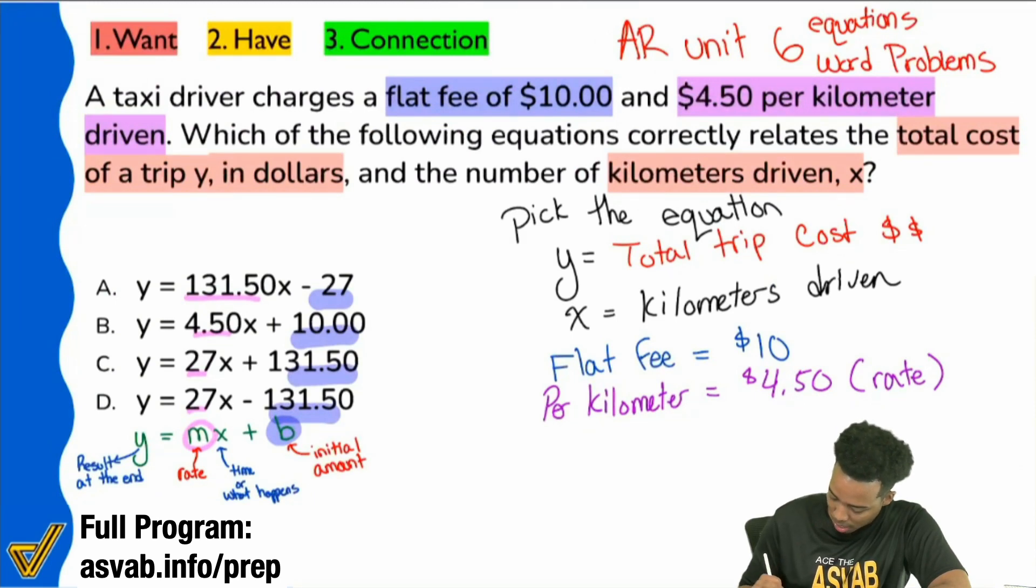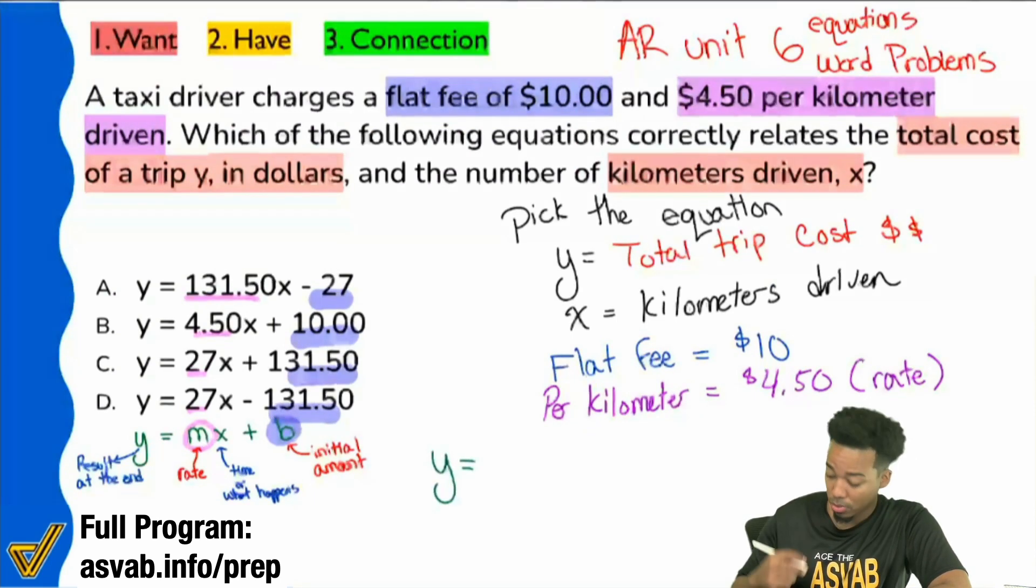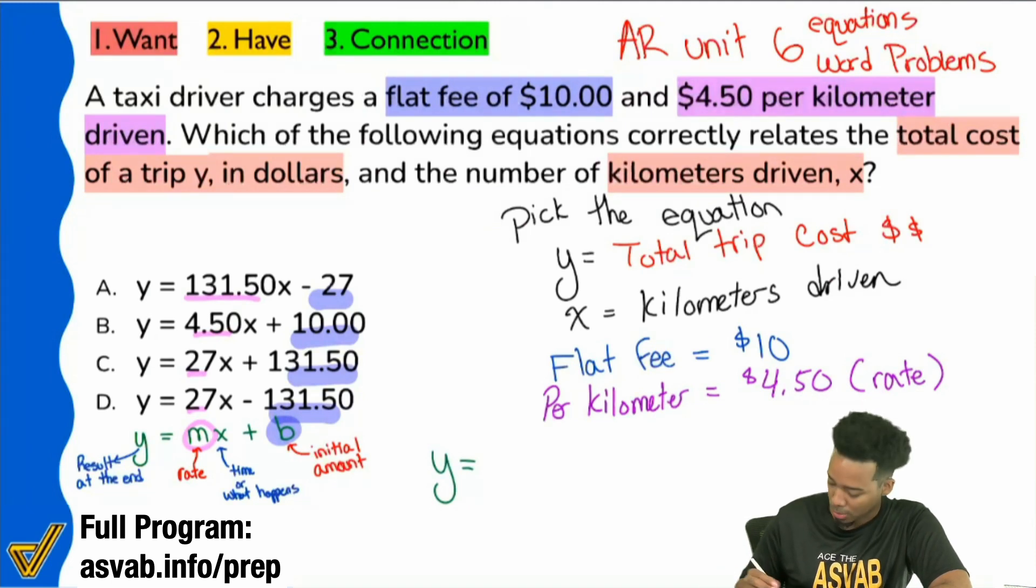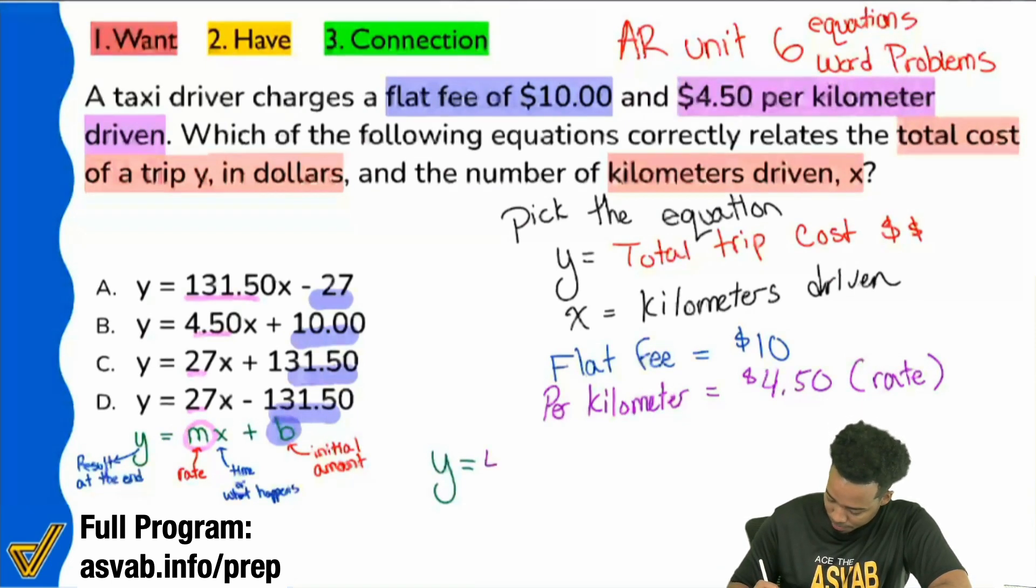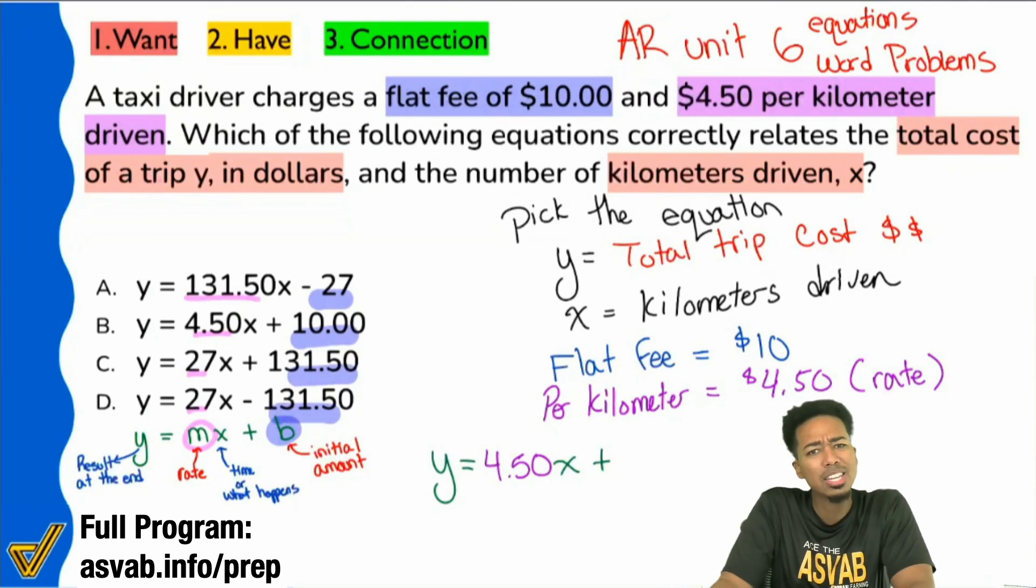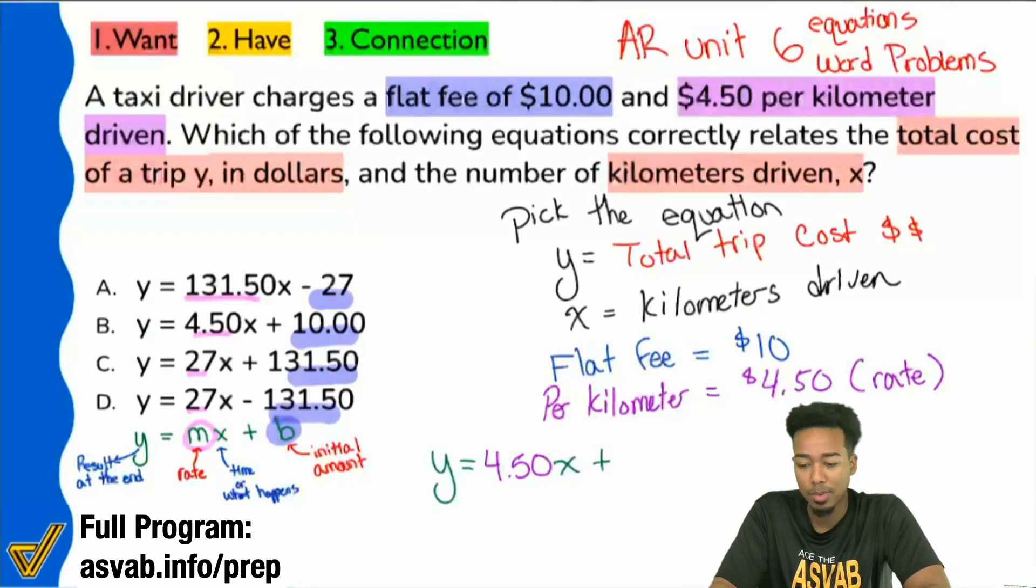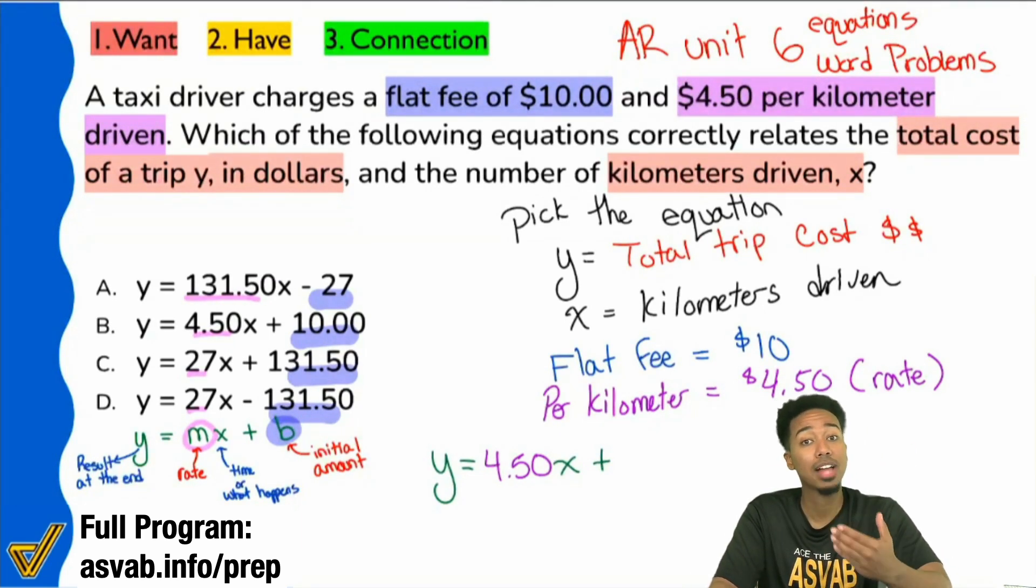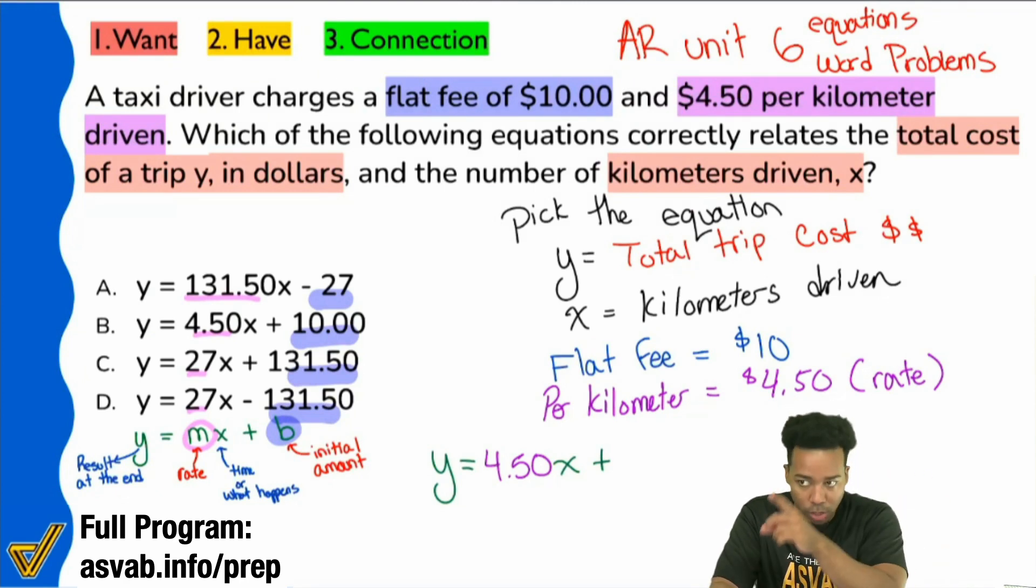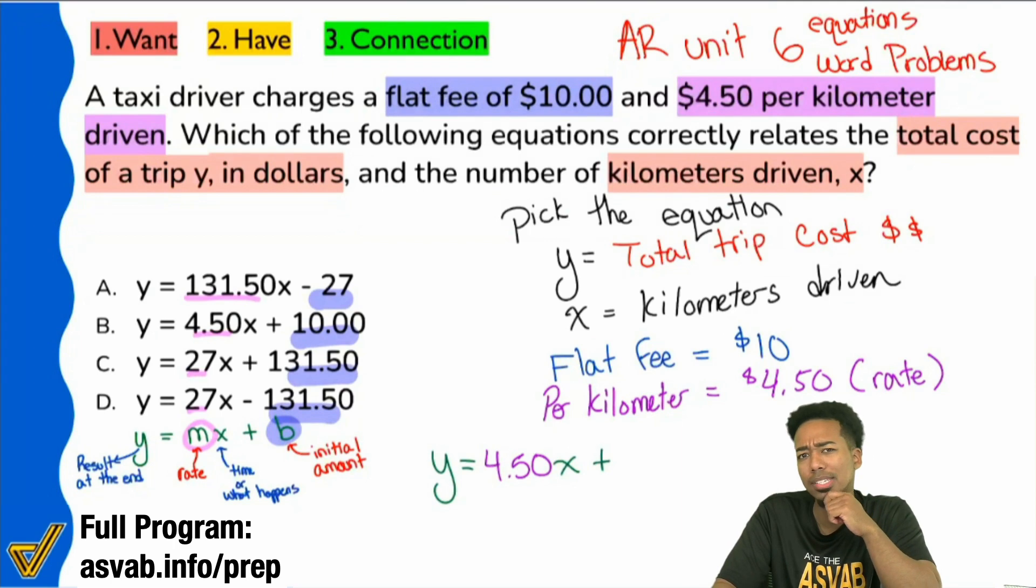All right. So let's try it out here. We have Y equals my rate was what? 450. So we have 450. Then we have the X, plus. And what was the initial amount? And in this problem, when we think about initial amount, what we're really thinking about, guys, is, hey, is there something that's there from the very beginning? Is there something that's there before everything starts? And yeah, that's going to be 10. It's going to be the $10 flat fee that this taxi driver charges just for someone to get in his taxi.